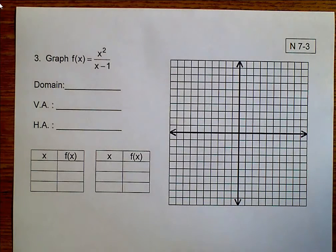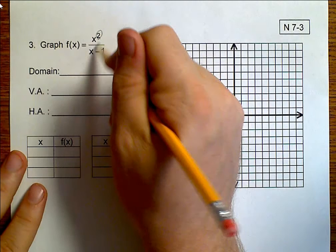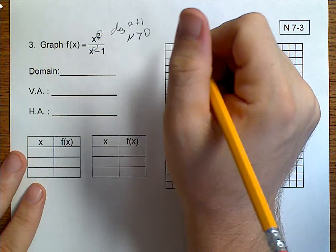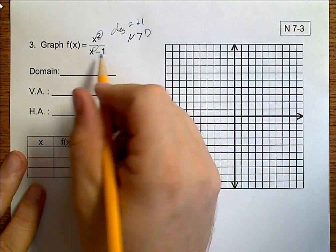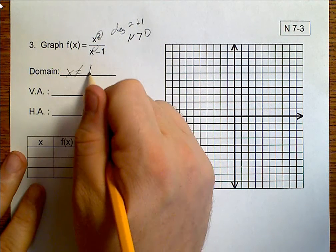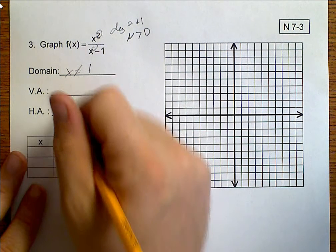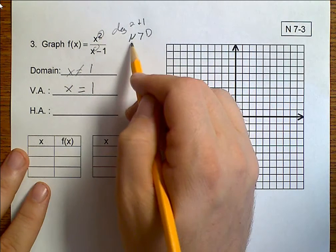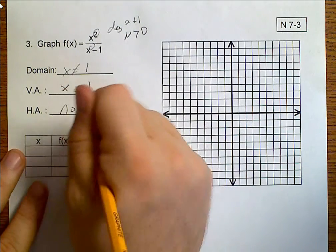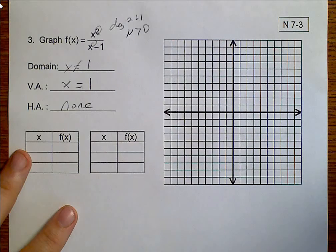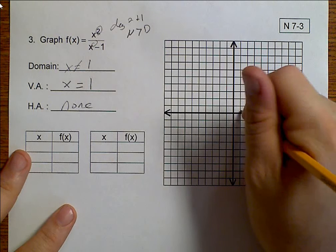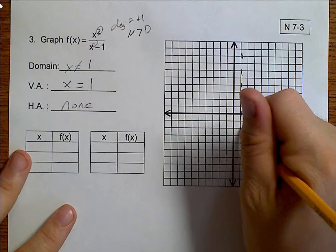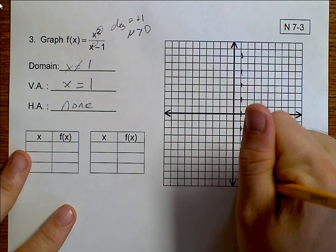Our last graph. Our degrees are 2 and 1. N is bigger than D. Our domain. Well, x cannot equal a positive 1, because 1 minus 1 is 0. So we have a vertical asymptote at x equals 1. Horizontally, our numerator is bigger than our denominator, so we do not have one. We come over here to x equals 1. Draw our asymptote.